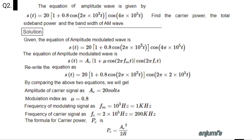Second problem. The equation of the amplitude modulated wave is given by S(t) = 20 × (1 + 0.8 cos(2π × 10³t)) × cos(4π × 10⁵t). Find the carrier power, total sideband power, and bandwidth of the AM wave.